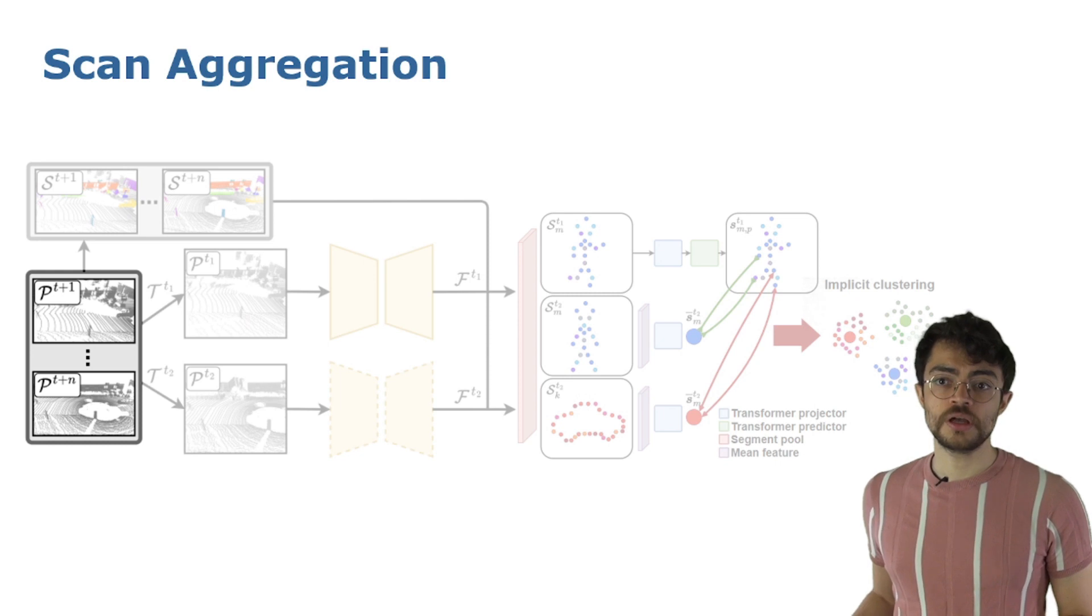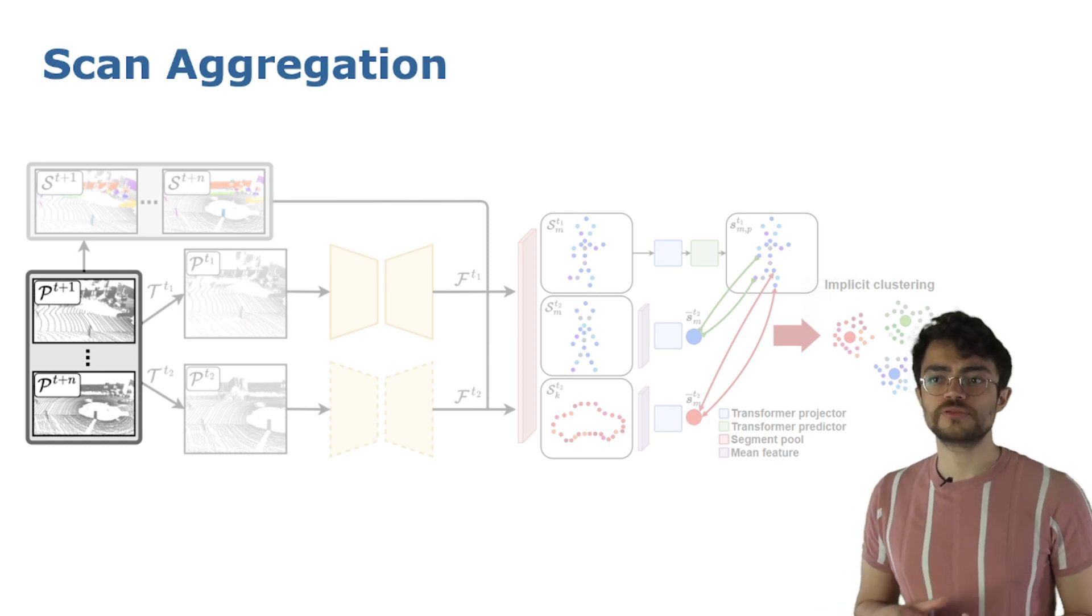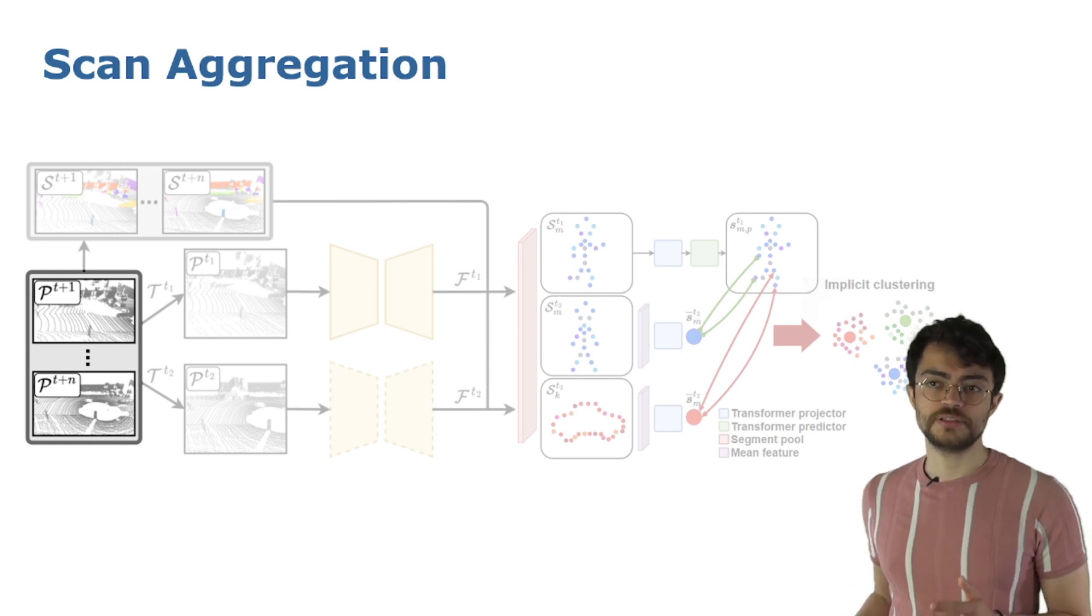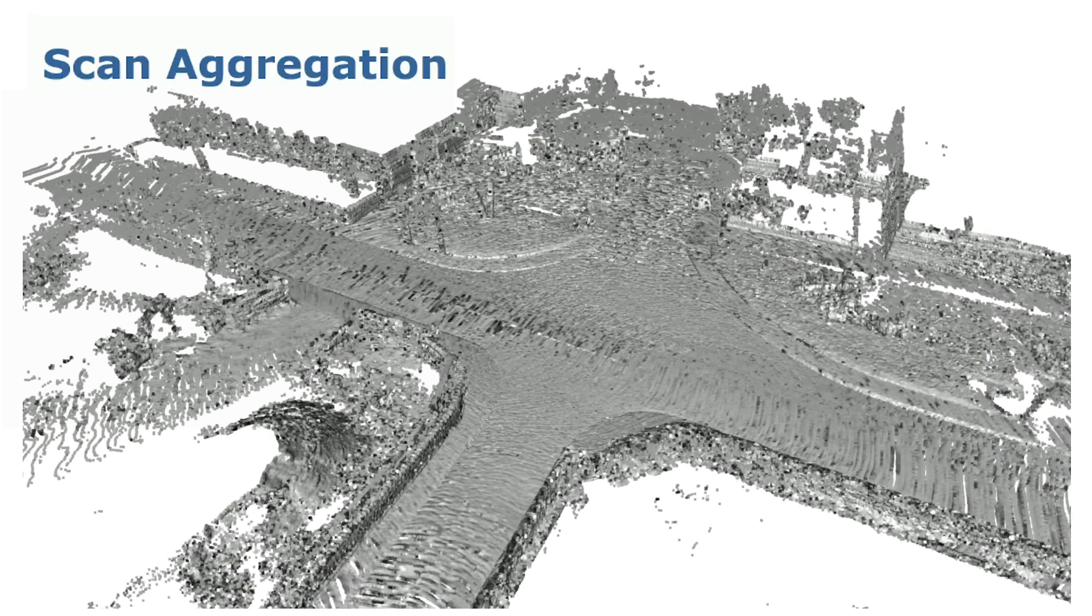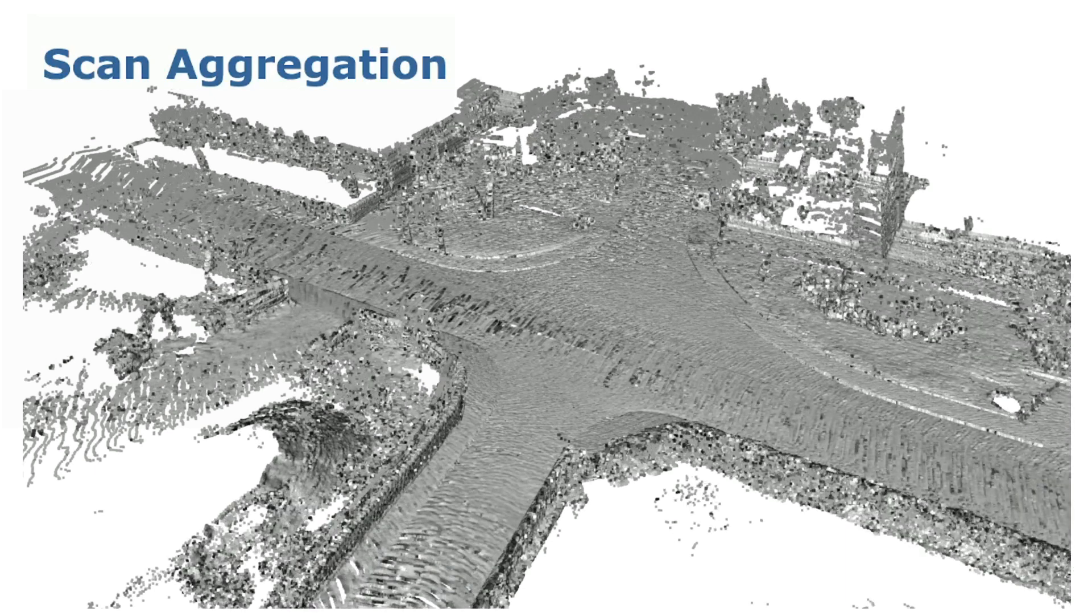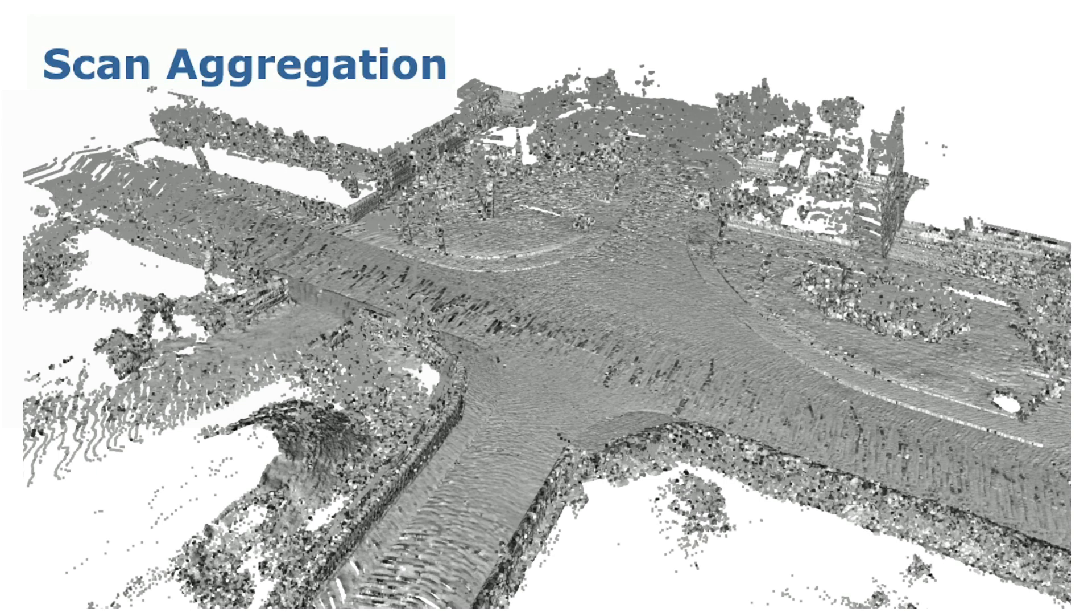In our approach, we start by extracting temporal views of objects seen at different points in time. We first aggregate a set of N scans in a common coordinate frame, which can be done by registering the point clouds and getting their relative transformations. During the aggregation, we maintain the index information to later retrieve the individual scans from the aggregated point cloud.